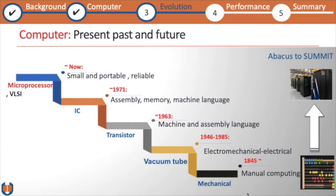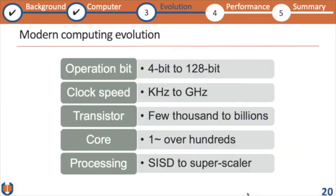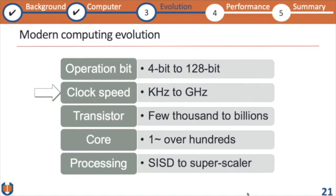There are a few terms used to represent computer performance. First, the operation bit — this is the capacity of a processor. In early processors it was only 4 bits, meaning a processor could operate on only 4 bits of data at a time. Nowadays it has grown to 128 bits, and some modern computers are capable of processing data at 128 bits at a time with a single instruction. Regarding clock speed, early computers were measured in kilohertz, but now they reach gigahertz.